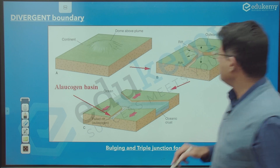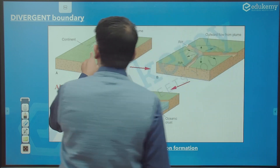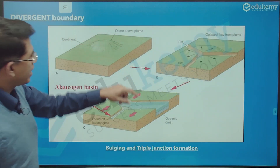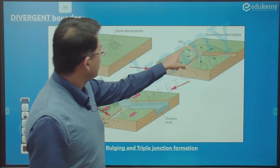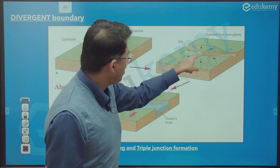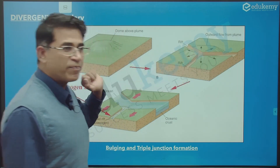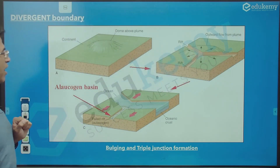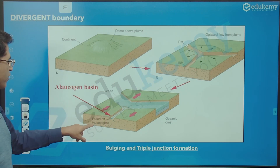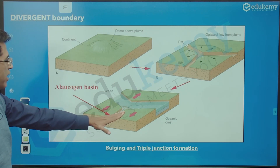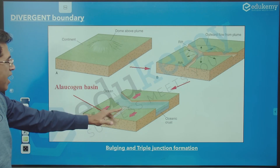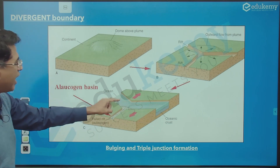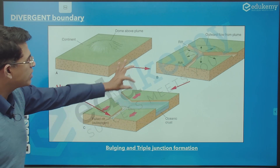Then we have the triple junction. When you have a domal bulge, the crack will have three arms — that is the triple junction. Of these three arms, one will die off — that is the aulacogen, the dead arm — and the other two will remain active, and this part will separate out.